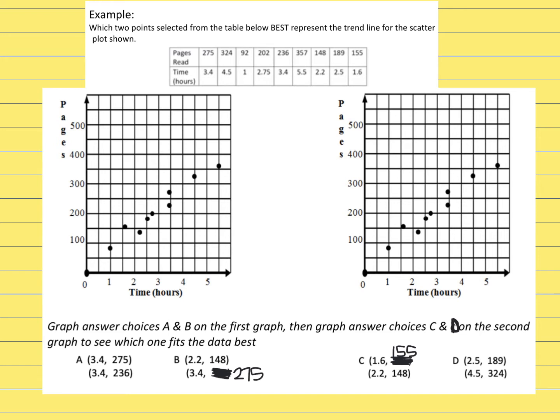I'm going to choose two different colors to plot A and B. So answer choice A, it says 3.4 and then 2.75. So I'm going to go over. Here's three and a half. So 3.4 would be in front of it. I'm going to go up to where I think 275 is, which is this one. I'm going to color that dot green.